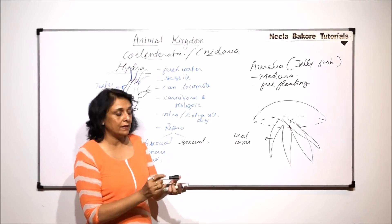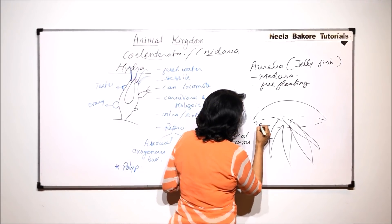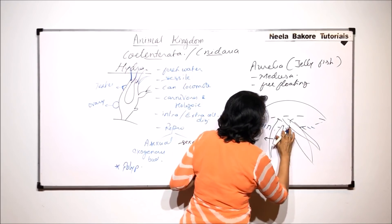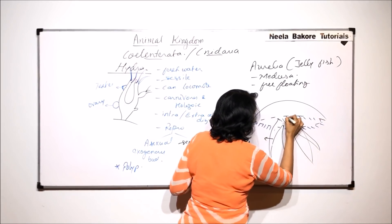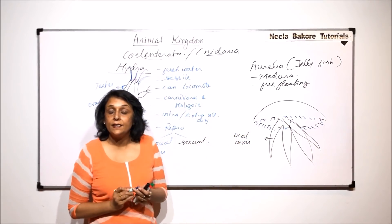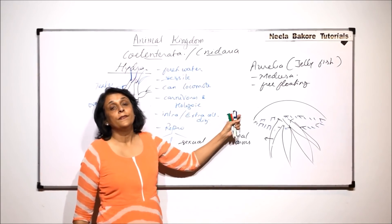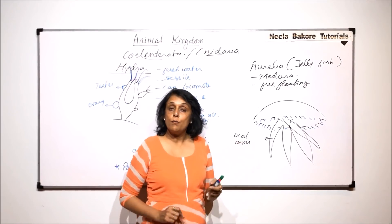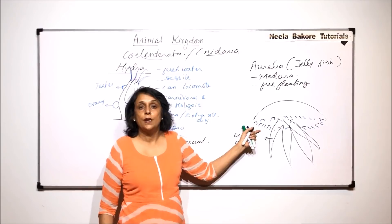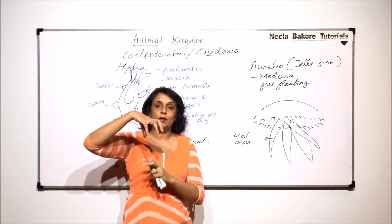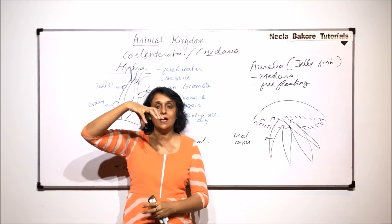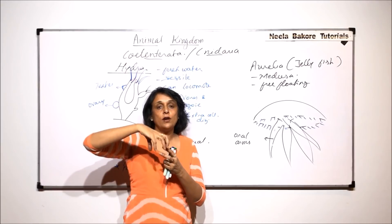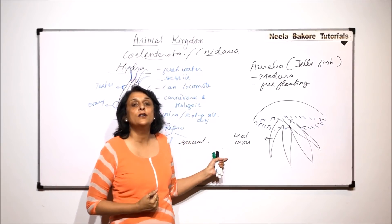The tentacles are present all around the peripheral part of the umbrella, and these tentacles have stinging cells — that is, nematocysts. One more important thing is locomotion, which is called hydropropulsion. Because of the umbrella-like body, it fills the body with water and then ejects this water with force, so the body moves upward.